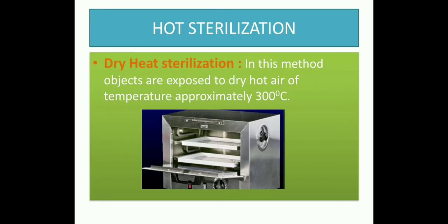In hot sterilization, basically two types are used: dry heat sterilization and moist heat sterilization. Dry heat denatures the microbial proteins, so dry heat is used for sterilization. Instruments and equipment which can withstand higher temperatures are subjected to dry heat sterilization. In this method, dry hot air of approximately 300 degree Celsius or more is used. For lab scale, small units of 3 to 5 liter capacity are used for glass vials also. A limitation is that materials which cannot withstand higher temperatures cannot be sterilized by dry heat sterilization.